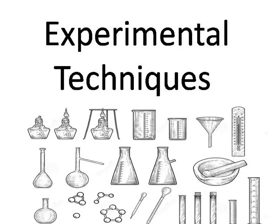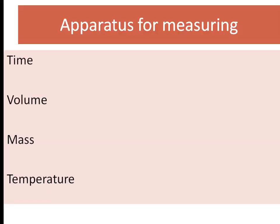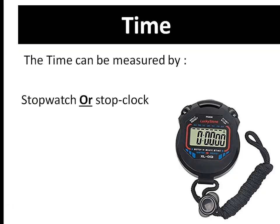Hi guys, welcome everybody. Today we're going to go to the science lab and do a lot of experiments. We're going to introduce you to a lot of tools and things that we use to get measurements and to separate mixtures and solutions from each other. We're going to introduce you to apparatus that measure time, volume, mass, and temperature. Time can be measured by stopwatch or stop clock, and it's very important for physics, chemistry, and biology because it allows us to measure the rate of reaction.